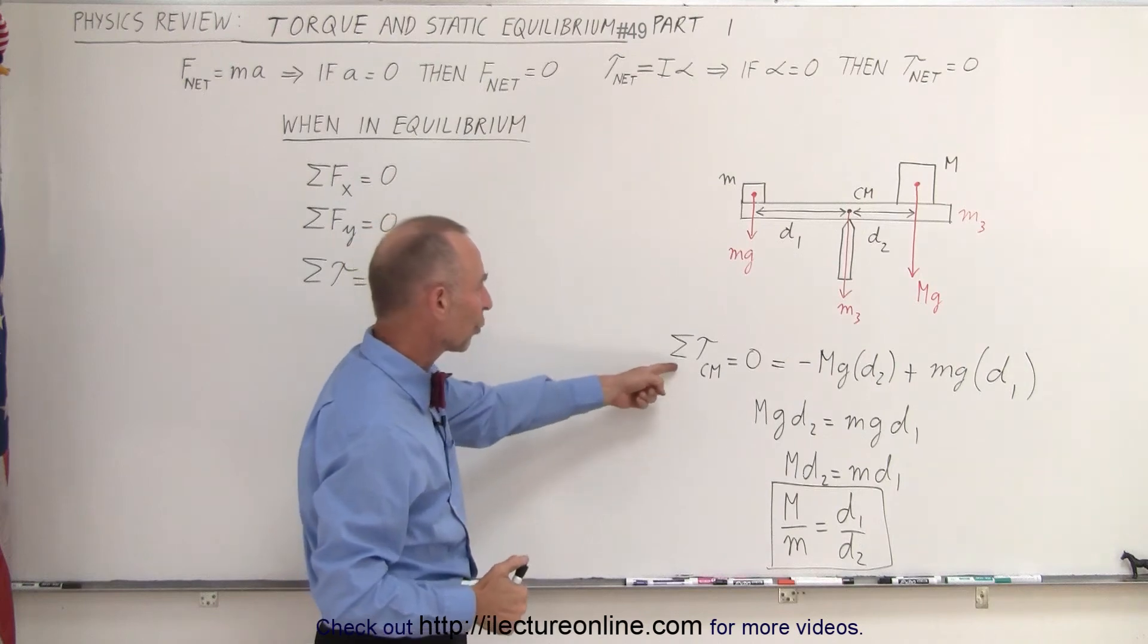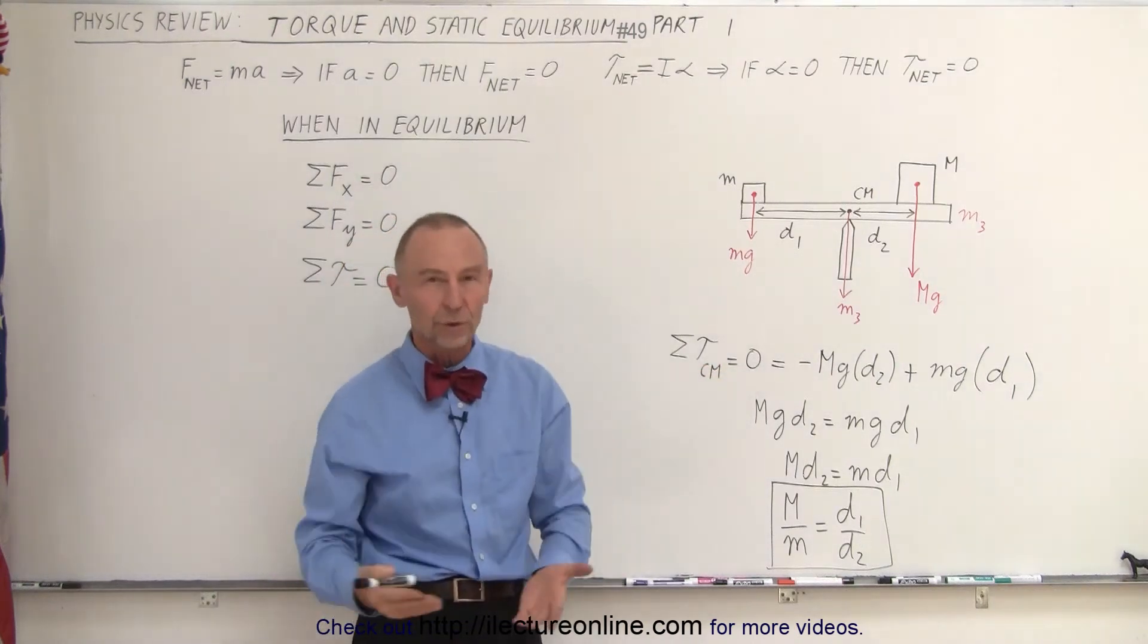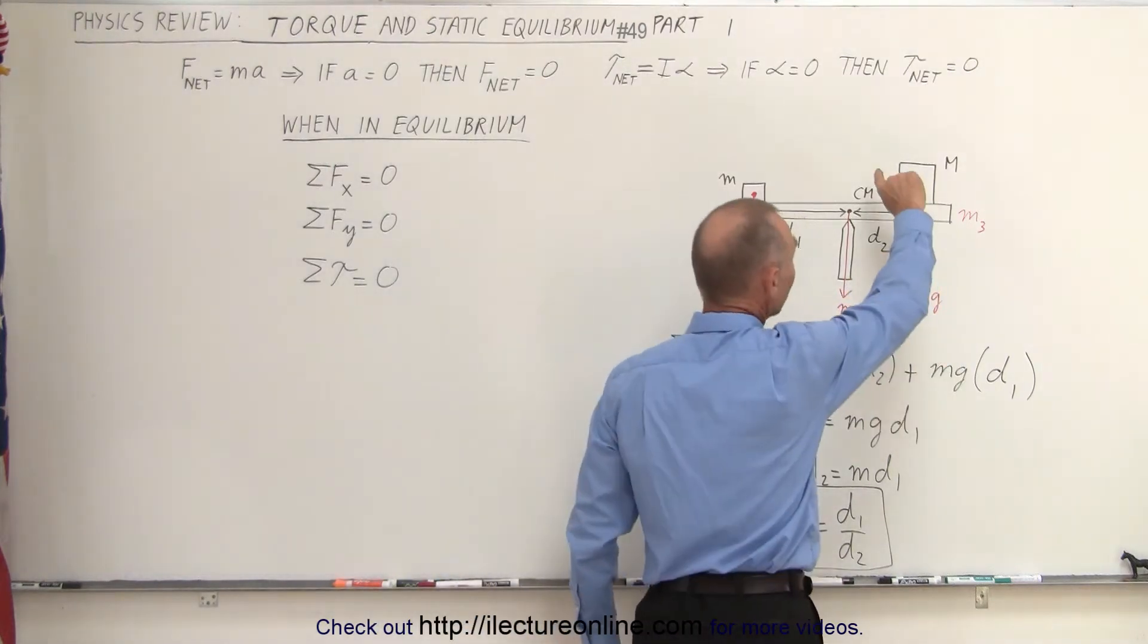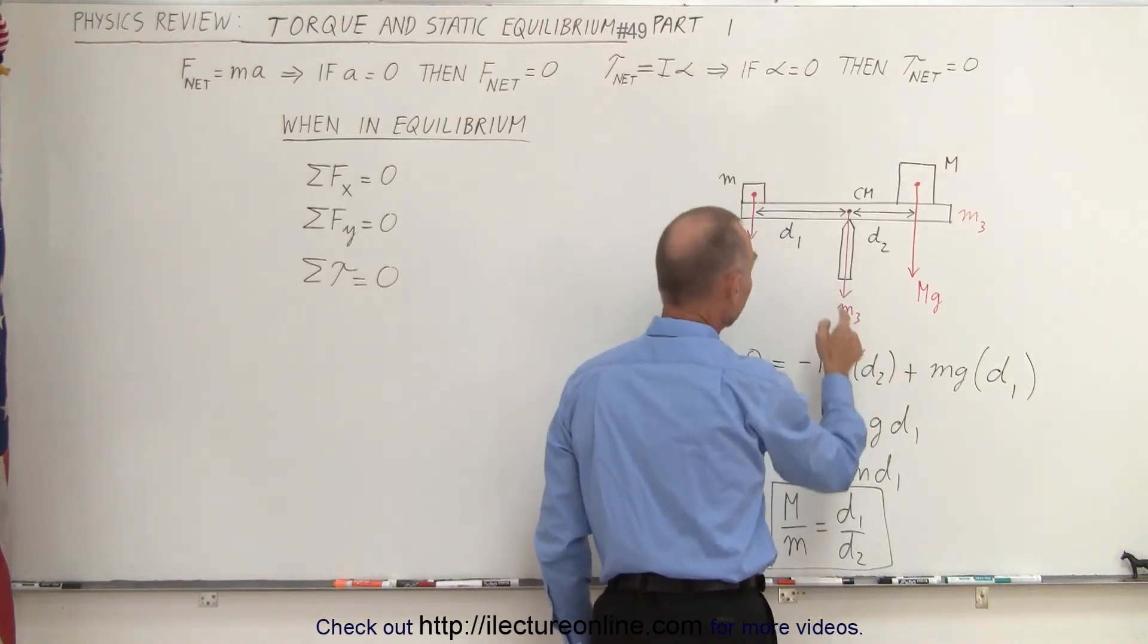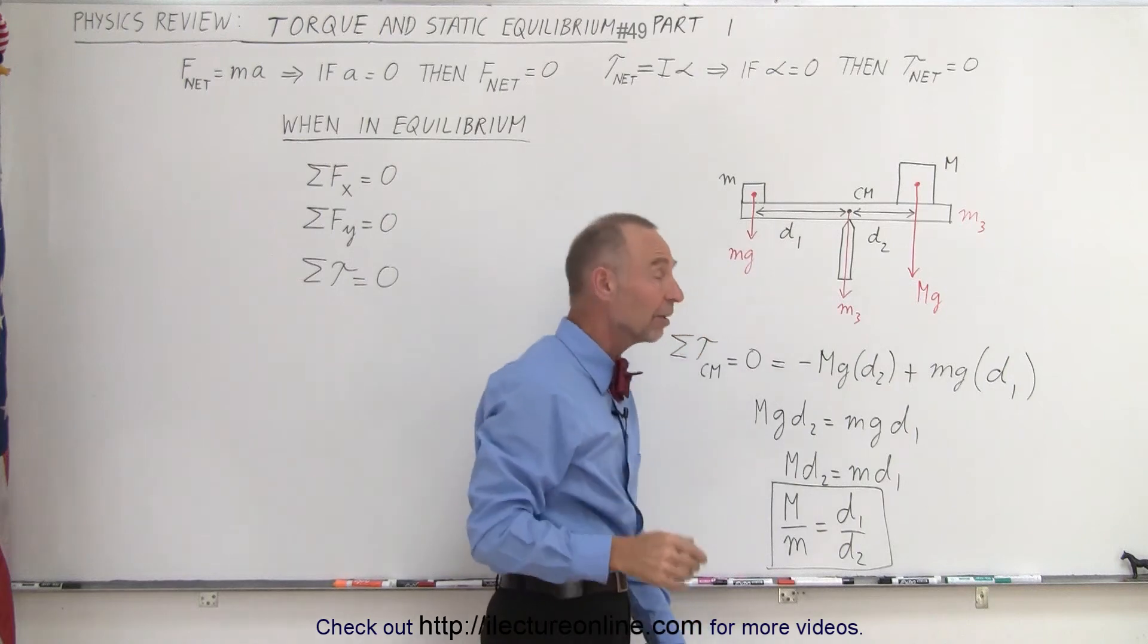Well that means that the net torque must equal zero. The net torque is the same as the sum of all the torques combined. So in this case we have the big Mg which is causing a clockwise torque, that's a negative torque, and we have little Mg which is causing a counterclockwise torque, which is a positive torque.